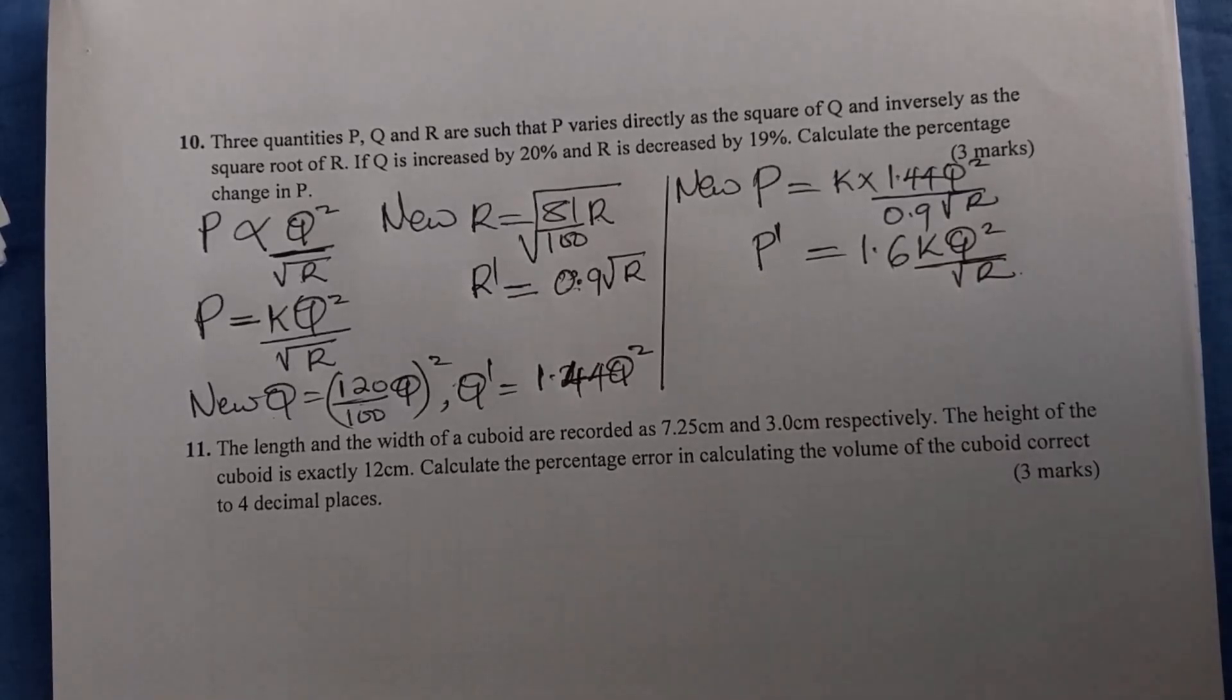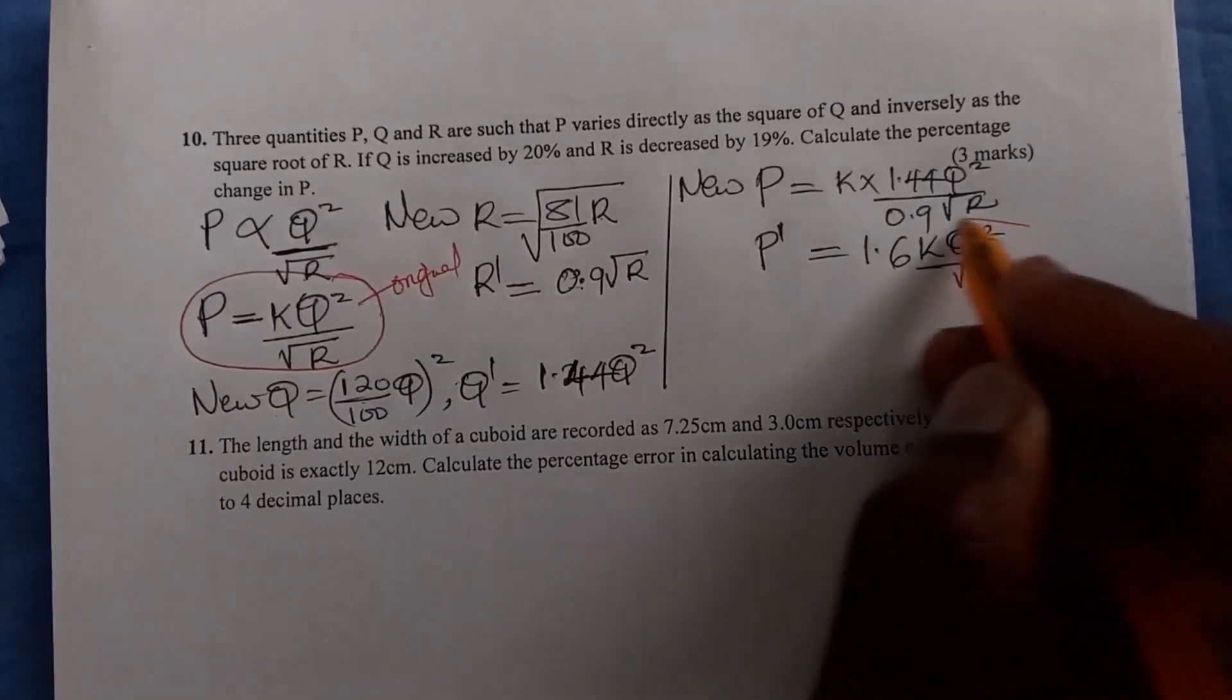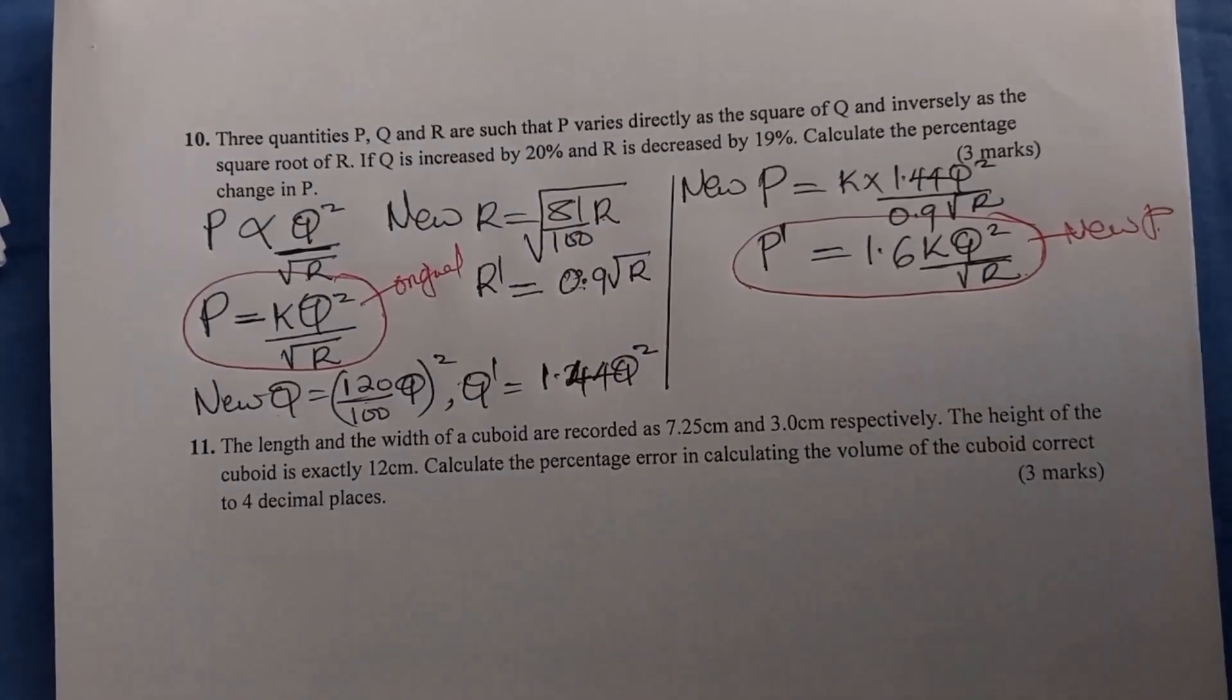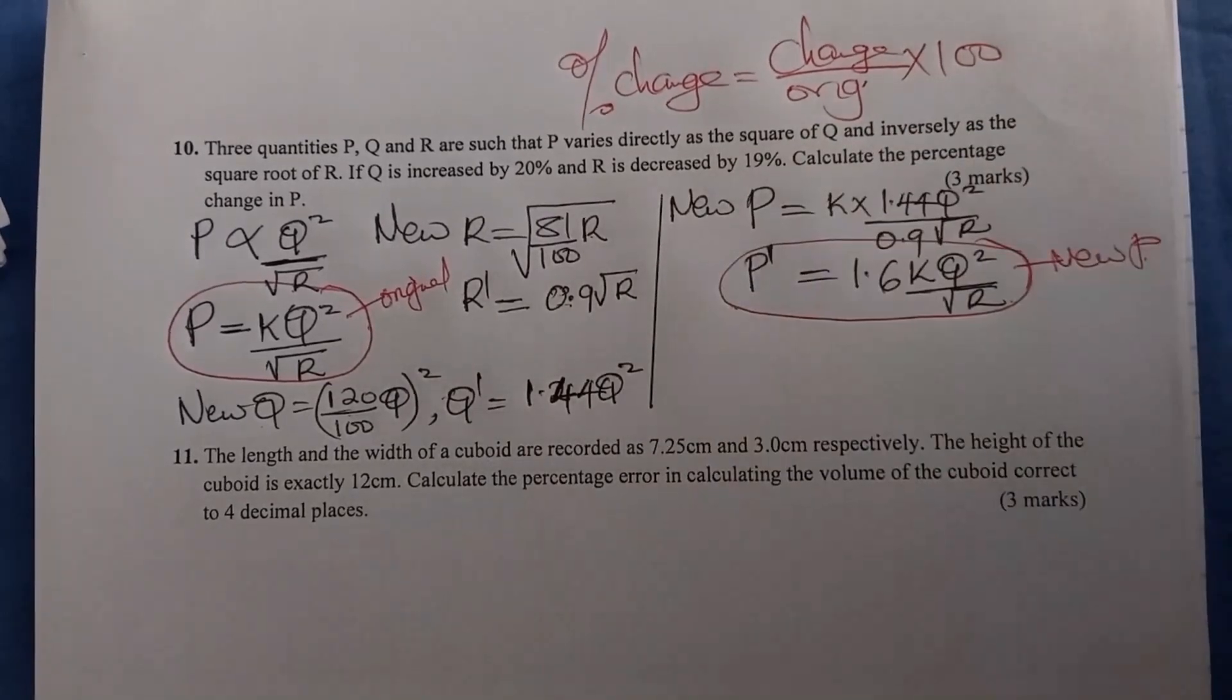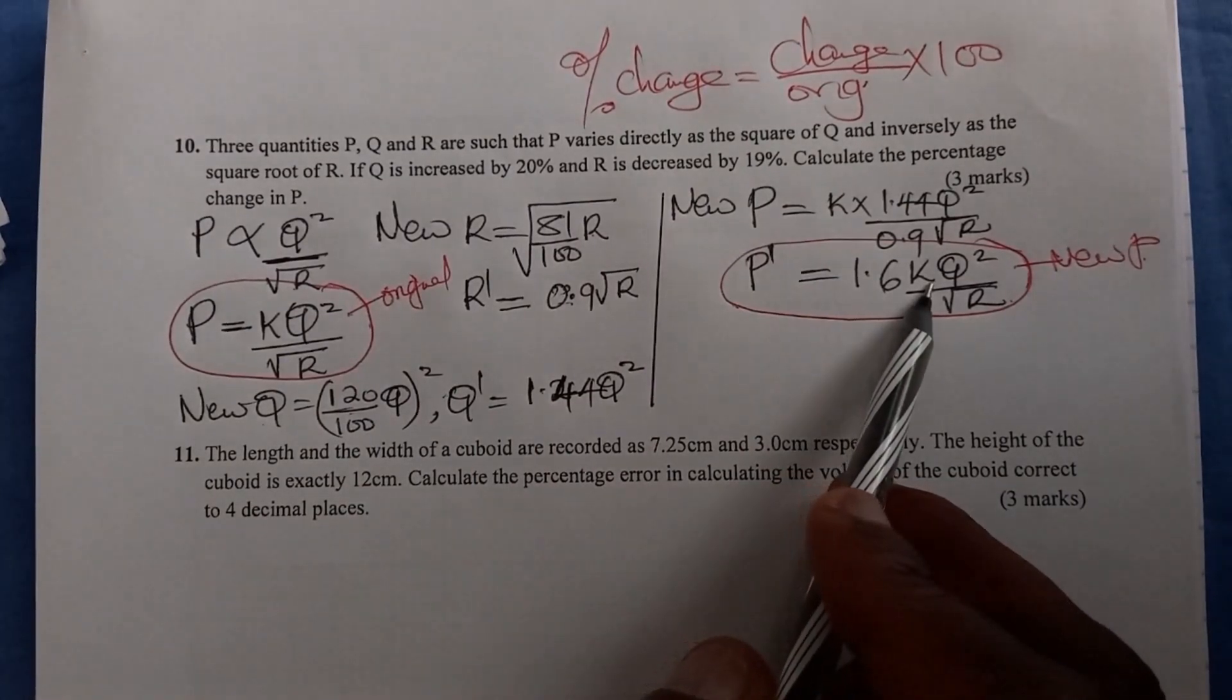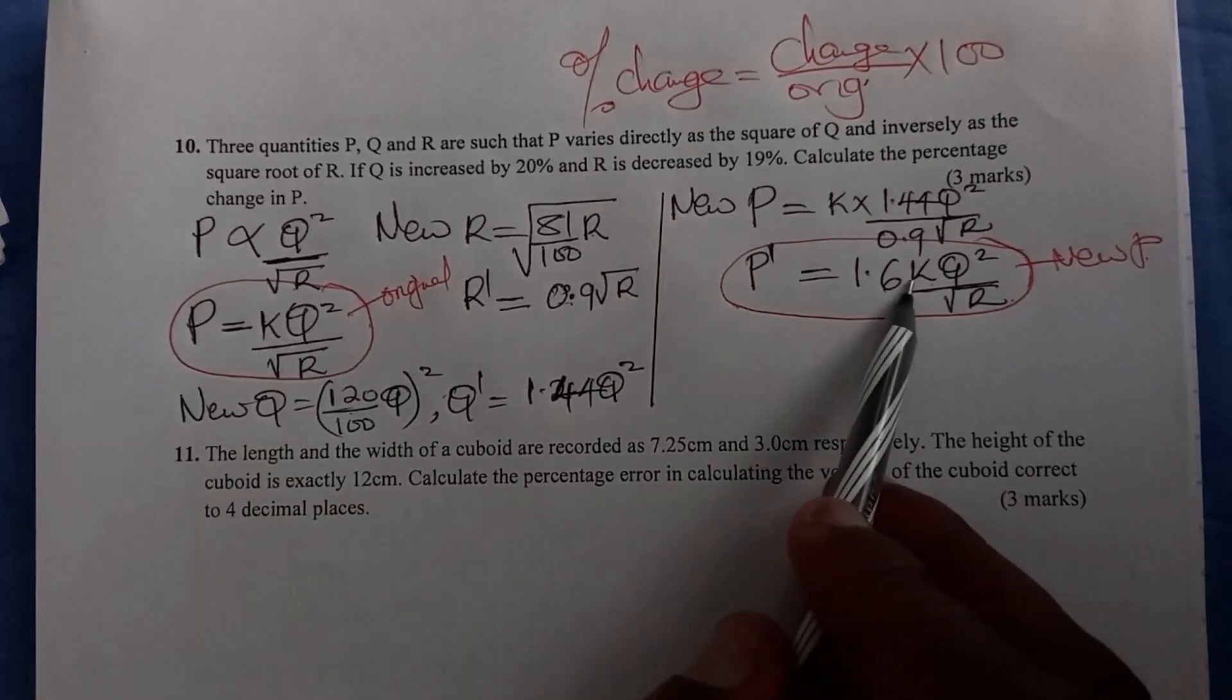Now you can get the percentage change in P. The original P is here, and there's the new P. You know how we get percentage change: percentage change is given by change over the original times 100. What is the change from the original to the new? The original was 1, and this one is 1.6, so from 1 to 1.6, the change will be 0.6.